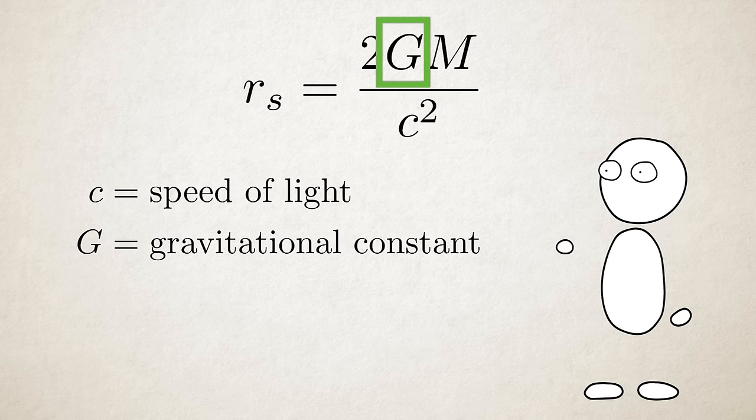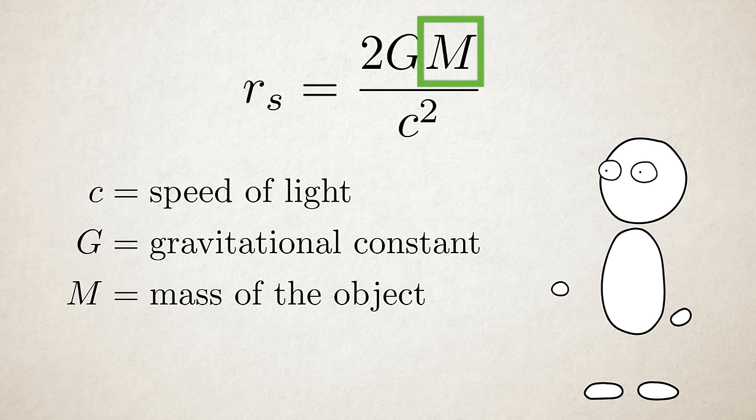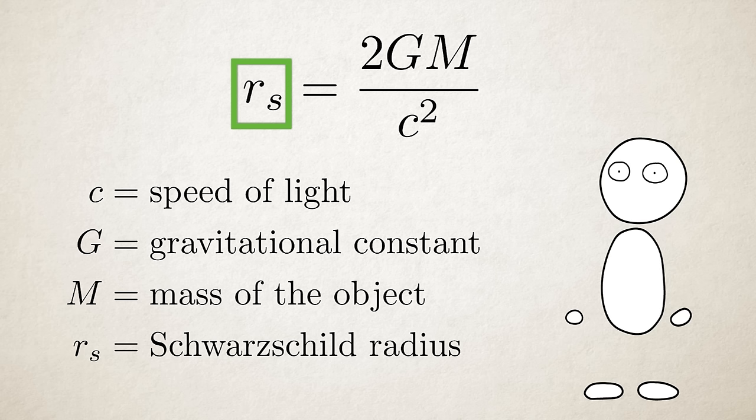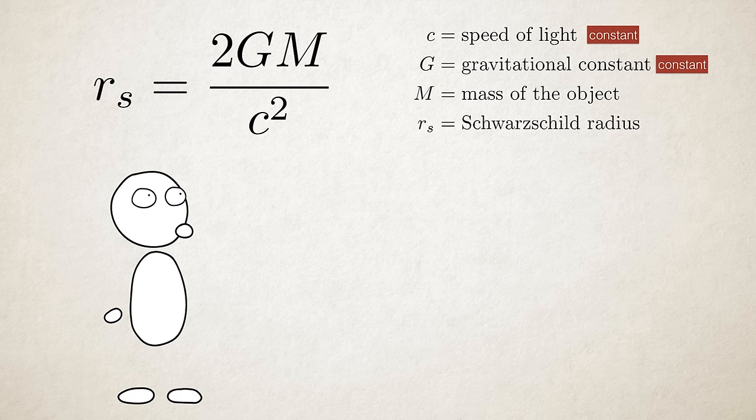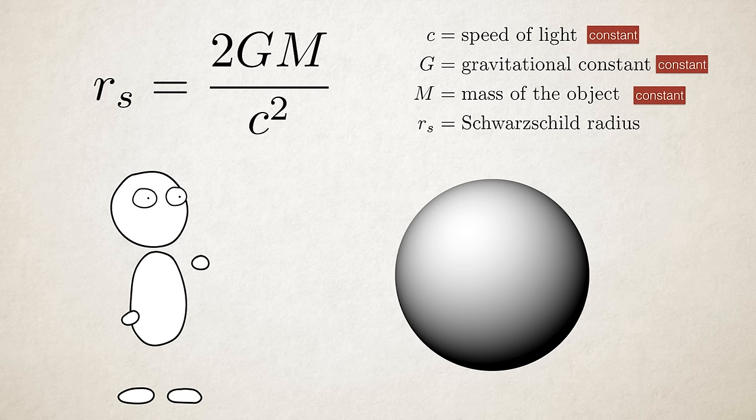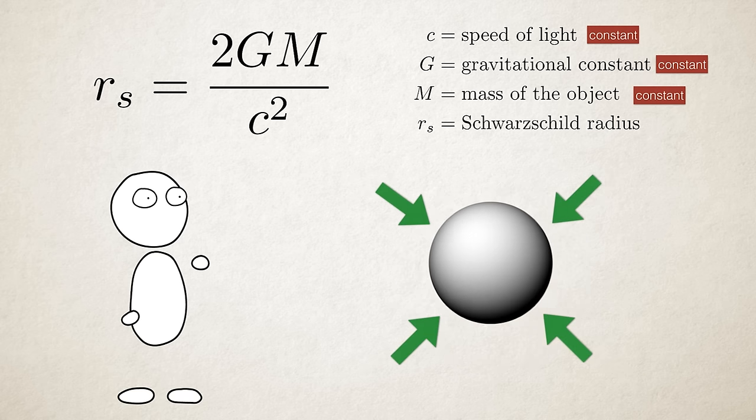C is the speed of light. G is the gravitational constant. M is the mass of the object. And RS is the Schwarzschild radius. C and G are constants. Say you have a ball of mass M.